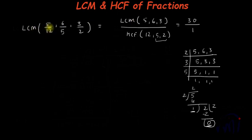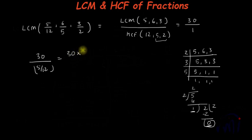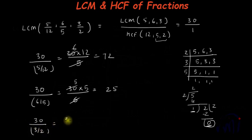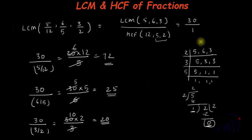So 30 is the LCM of 5/12, 6/5, and 3/2. Verification: 30 divided by 5/12 equals 30 × 12/5 = 72. Similarly, 30 divided by 6/5 equals 30 × 5/6 = 25. And 30 divided by 3/2 equals 30 × 2/3 = 20. In each case we get an integer as the quotient, confirming that 30 is the LCM of 5/12, 6/5, and 3/2.